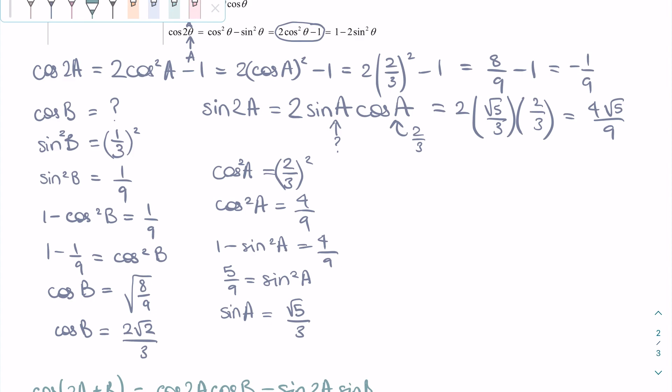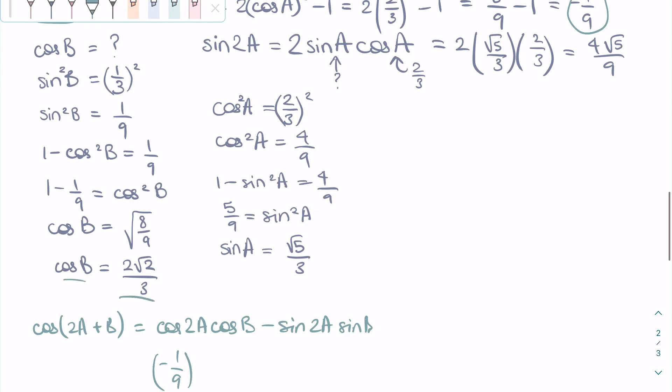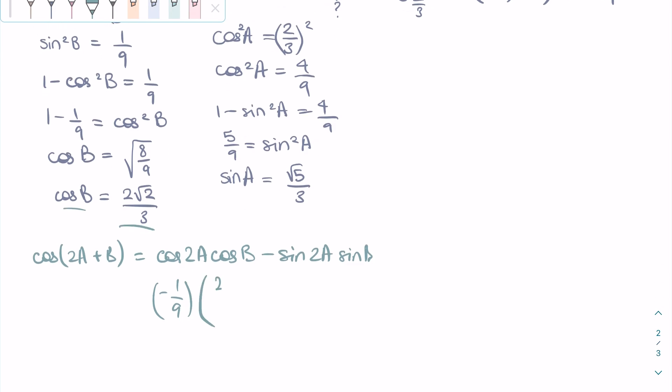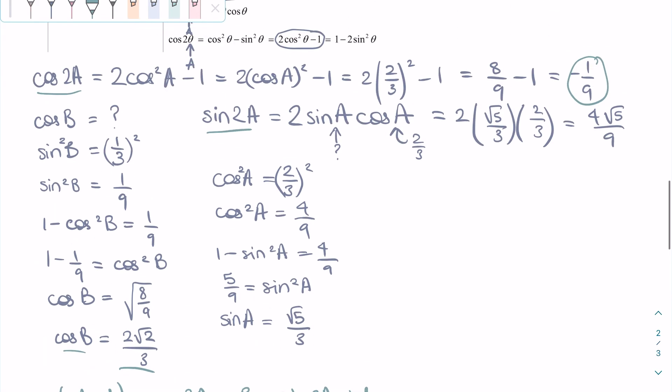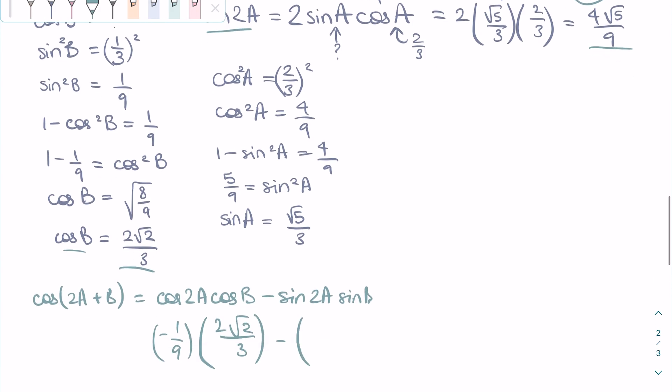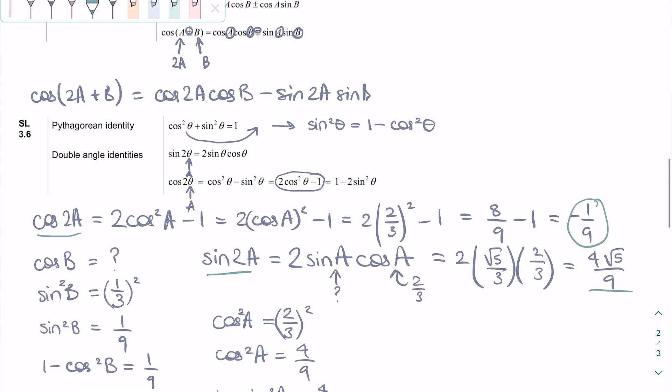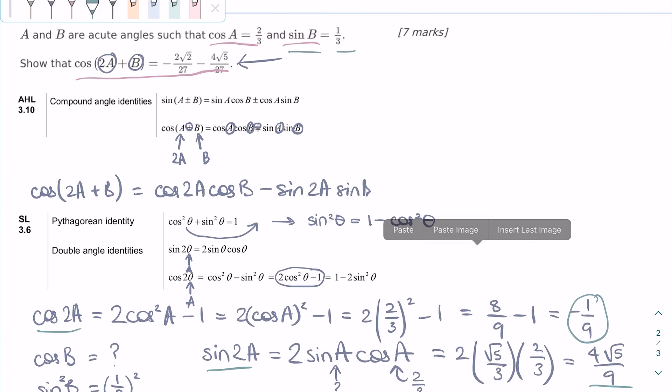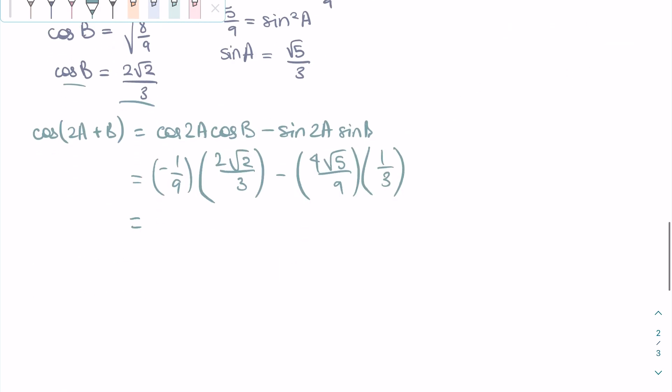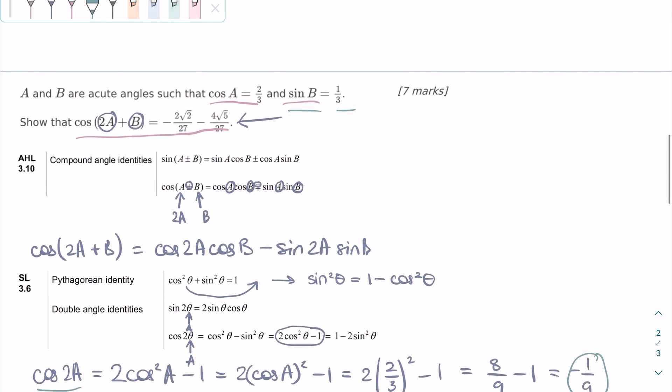The last step is to replace all of the expressions with the numerical values to get the final answer. So we know cosine 2A is minus 1/9, cosine B is 2 square root of 2 over 3, sine 2A is 4 square root of 5 over 9, and sine B is 1/3. After simplification, we get the answer that was asked of us in the question.